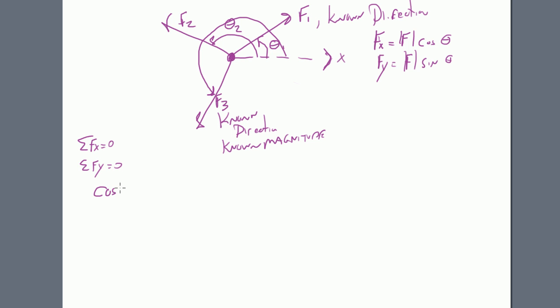And so you historically would have written this. The cosine of theta one times the force one plus force two times the cosine of theta two plus force three times the cosine of theta three all equals zero. And you would have written force one times the sine of theta one plus force two times the sine of theta two plus force three times the sine of theta three all equals zero.